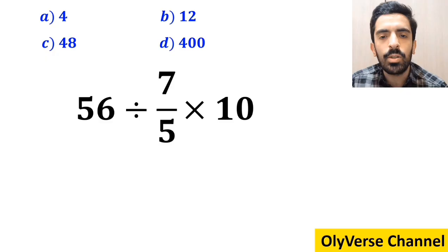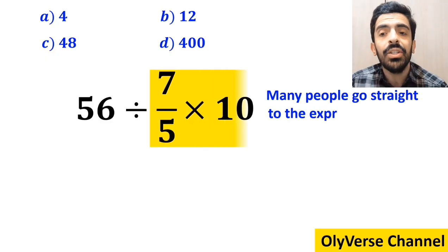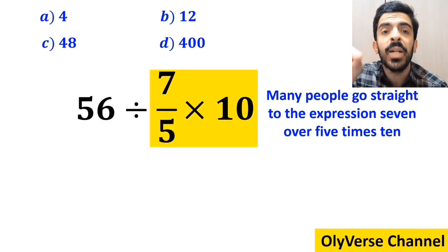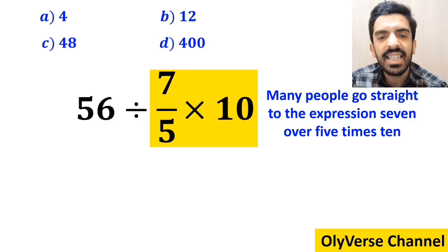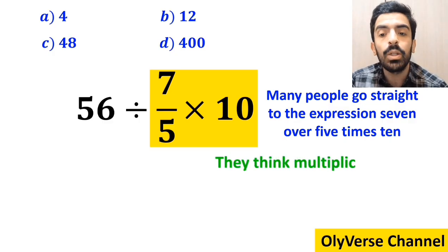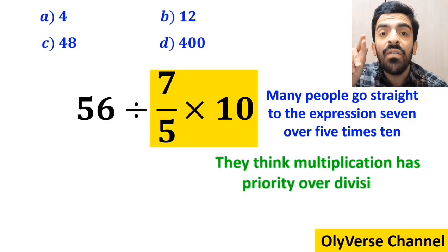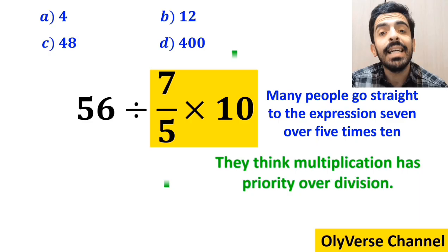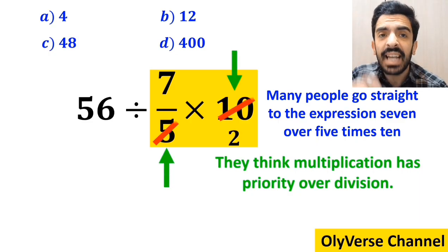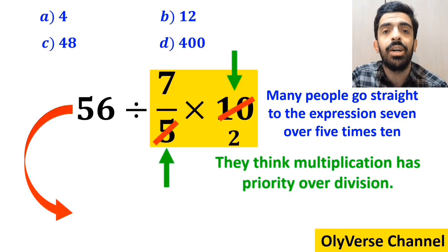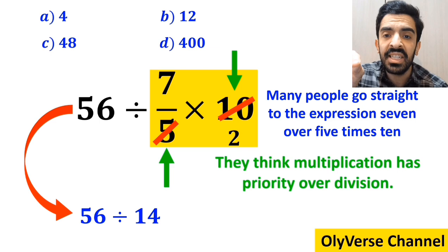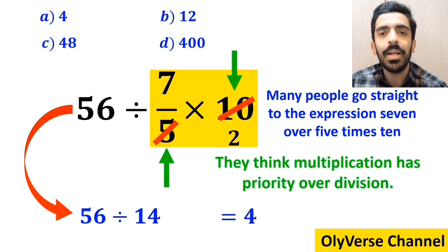At the beginning of solving this question, many people go straight to the expression 7 over 5 multiplied by 10, which I've highlighted in yellow, because they think multiplication has priority over division. And they say it's easy to simplify 10 with the 5 in the denominator, and rewrite this expression as 56 divided by 14, which finally gives them the answer 4.